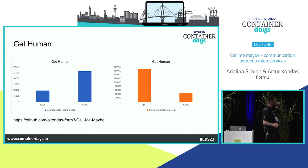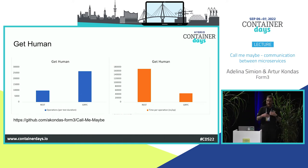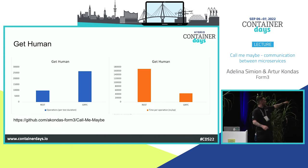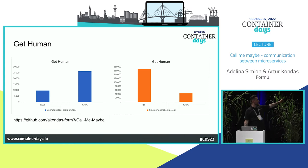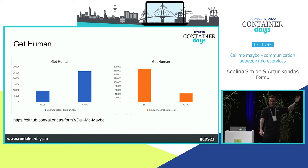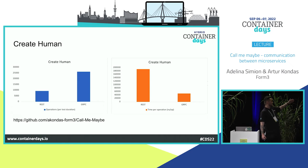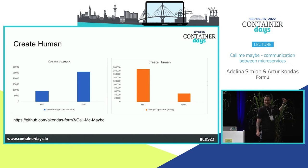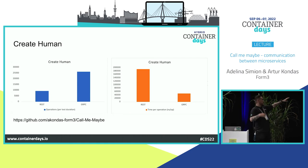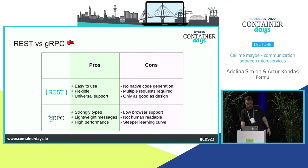The benchmarking results: on the left you have get-human operations per test duration — more operations is better. On the right you have time per operation — less time is better. Running locally, gRPC is around four times faster. If you move to containers, it's around ten times faster. The same goes for creating a human — REST takes way more time per operation than gRPC, which comes down to the serialising and deserialising of JSON.